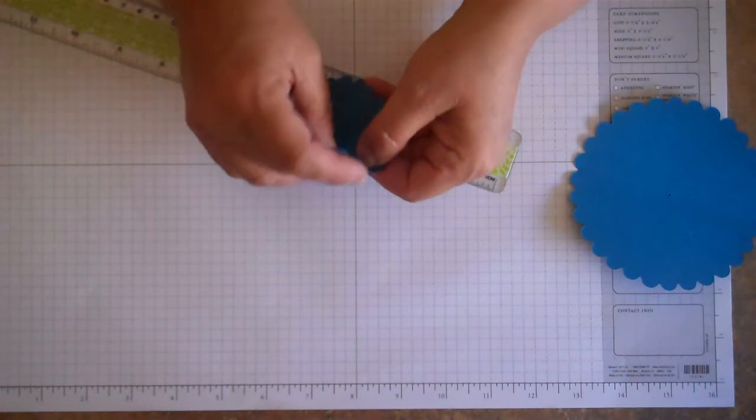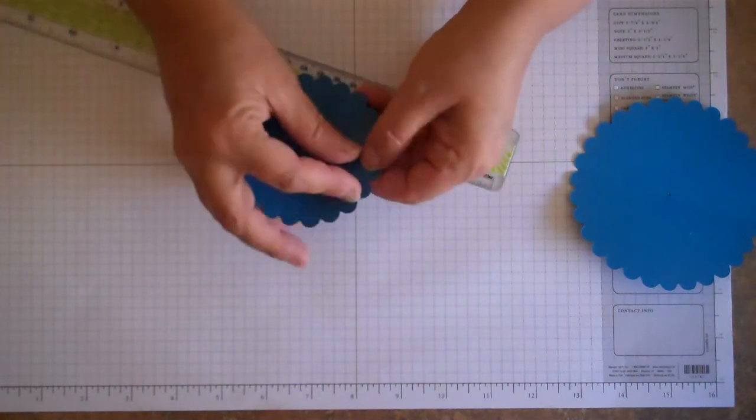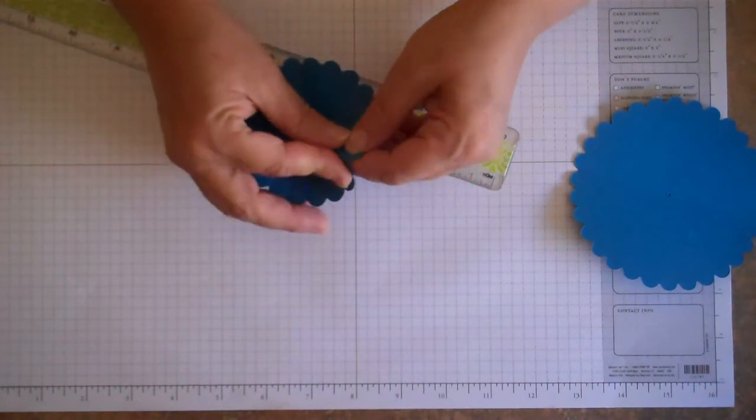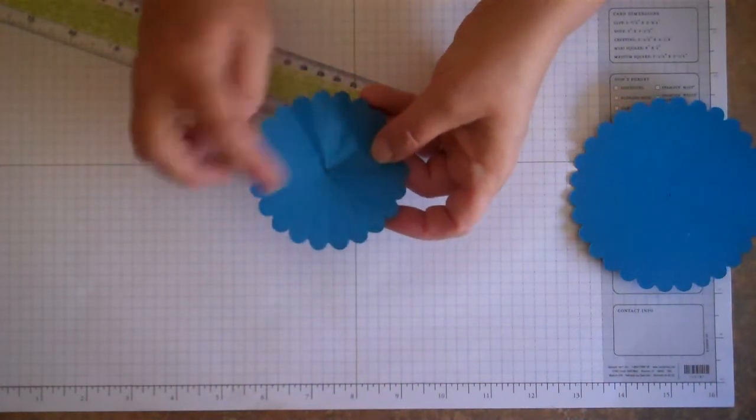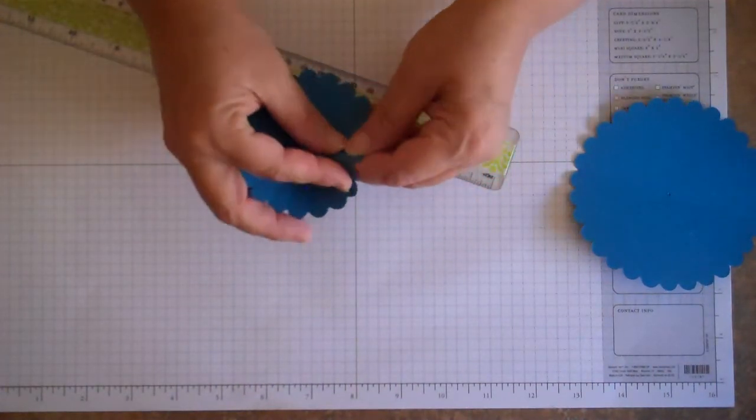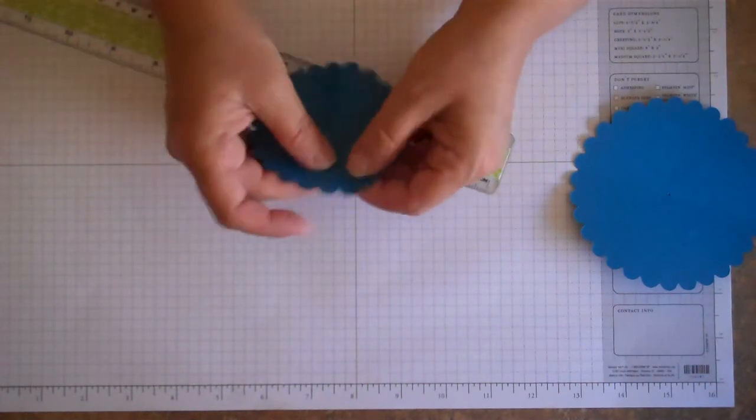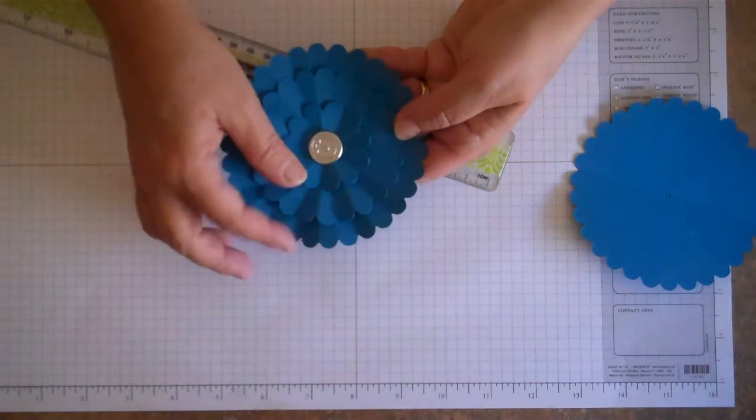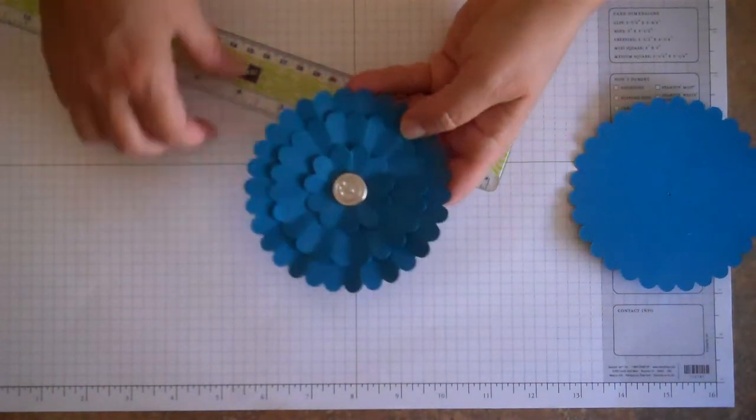This is great while you're watching TV or doing something that you've got a little time to do. If you make a bunch of these at once, it really goes pretty quickly. And just keep doing that. You don't want to fold in the center yet because we're going to do that last. So you just go all the way around until you've actually formed all of these little scallops that stick up.